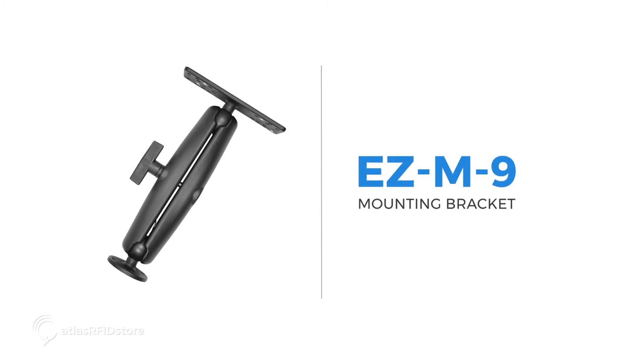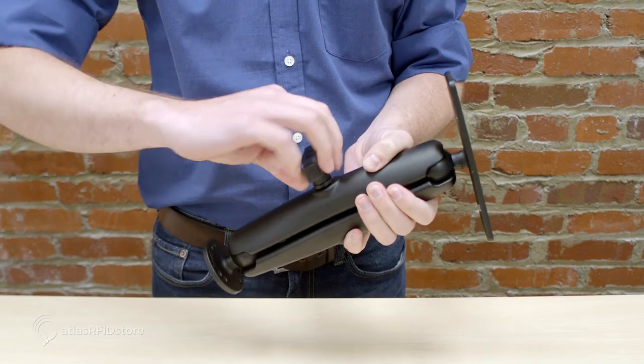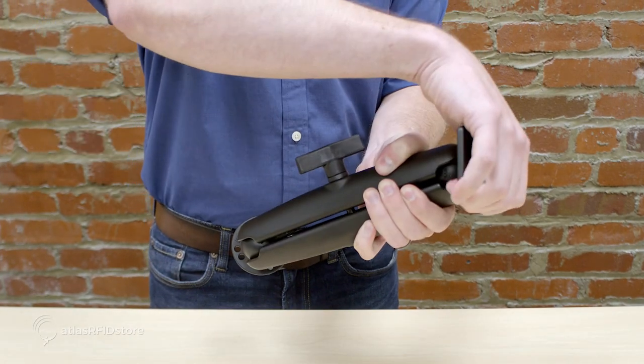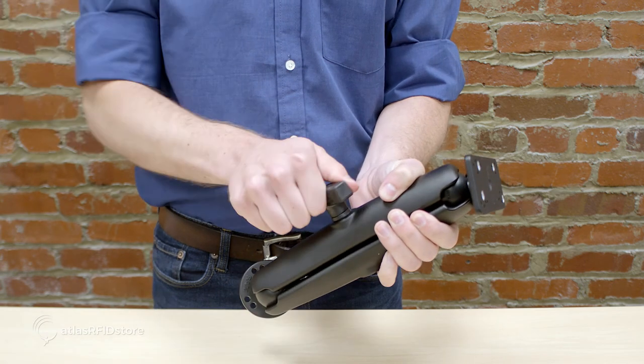This is the EZ-M9. The primary advantage of this mount is that it allows for quick and easy adjustments after the antenna is mounted, and both ends are fully articulating.